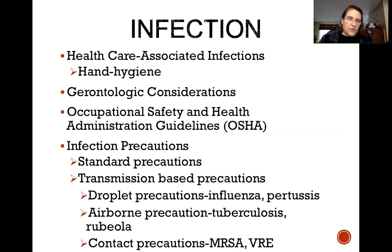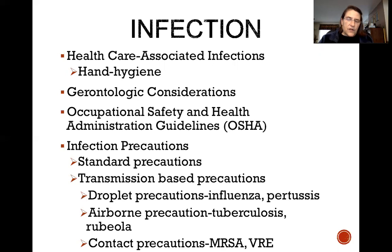We have several types of infection precautions. Know your standard precautions and know your transmission-based precautions. Those are droplet precautions for influenza and pertussis — we are in influenza season right now — airborne precautions for tuberculosis and rubeola, and contact precautions for MRSA and VRE.